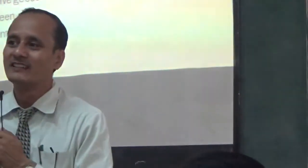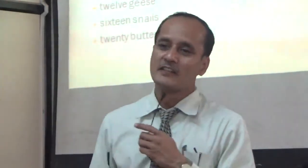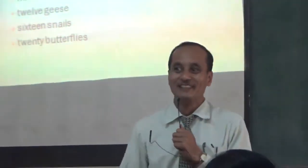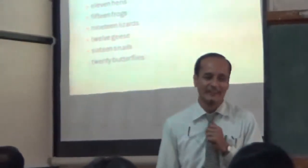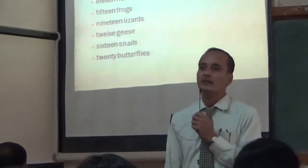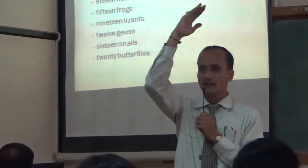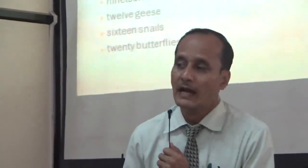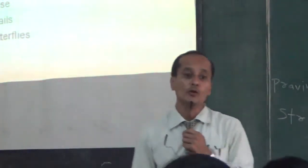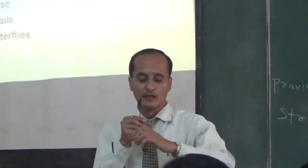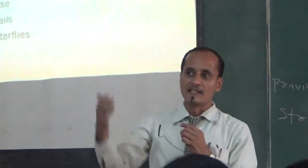I will request a few sentences. Sachin Tendulkar has scored 100 centuries — the number 100 is the adjective of quantity. One more example: I have two pairs of shoes. So the word 'two' is an adjective of quantity. The word 'two' is an adjective of quantity.